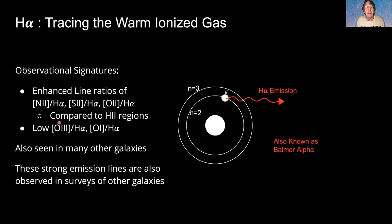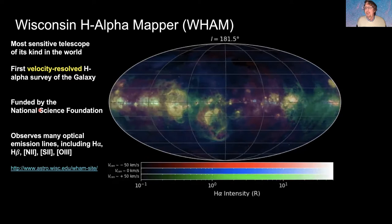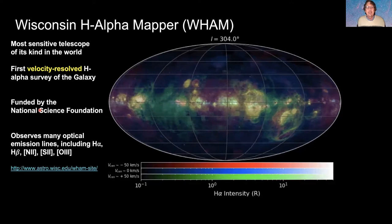Different ions — nitrogen, sulfur, oxygen — can produce other optical emission lines, and you can look at the brightness ratios of different lines to diagnose the radiation field. This has produced a whole industry of astronomers classifying galaxies by their optical line ratios to infer physical conditions. That leads us to one of the things that drew me to Wisconsin as a young postdoc: a project called the Wisconsin H-Alpha Mapper, or WHAM — still ongoing after more than 20 years, recently refunded for another three years.